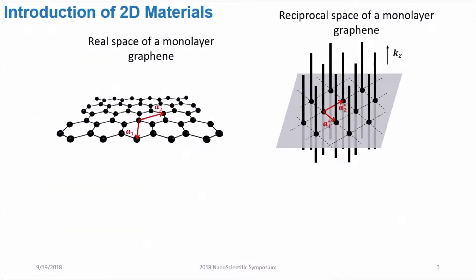Let me introduce some background about the real space and the reciprocal space of a two-dimensional material. Taking graphene as an example, the real space of graphene consists of a network of carbon atoms which forms this honeycomb structure.